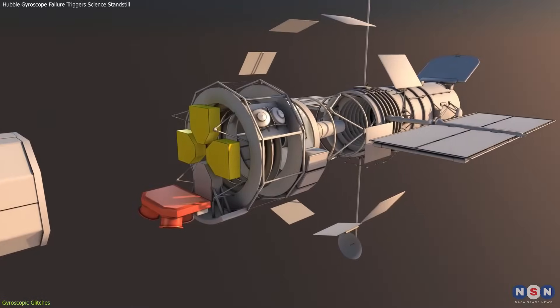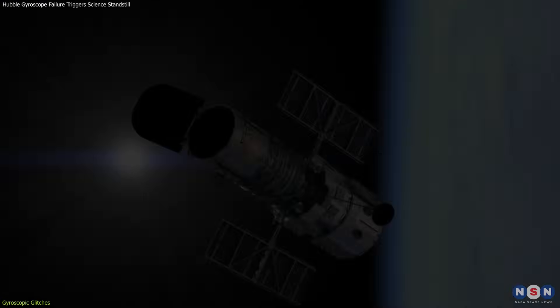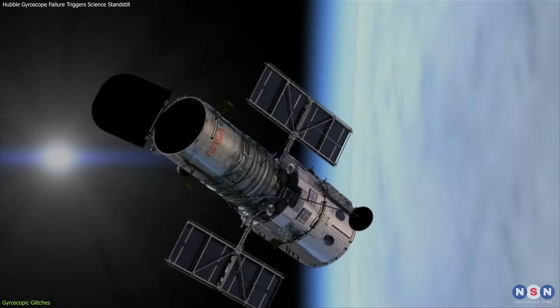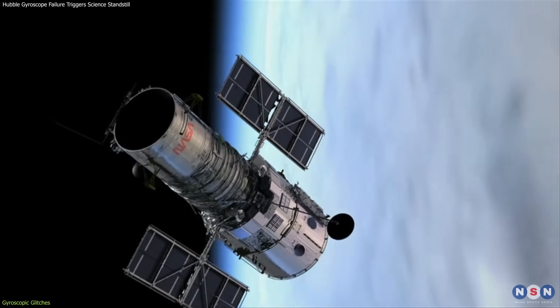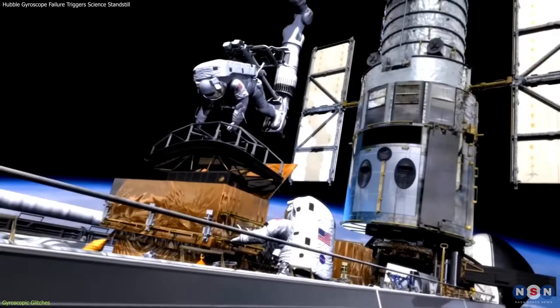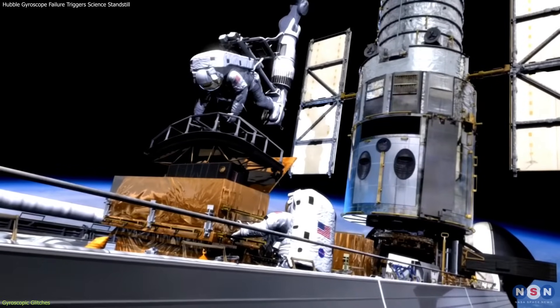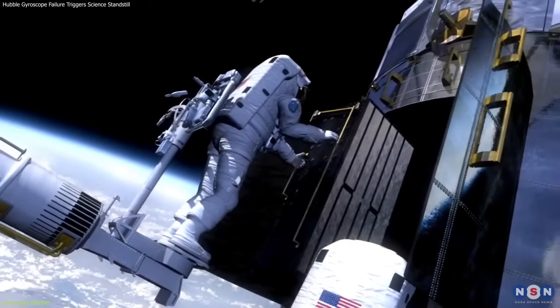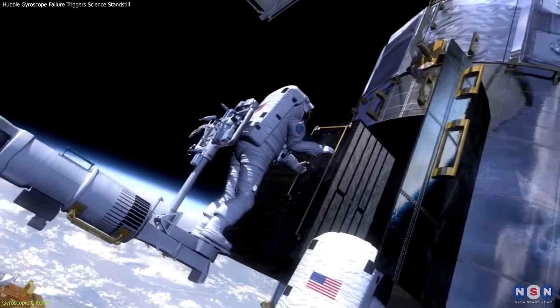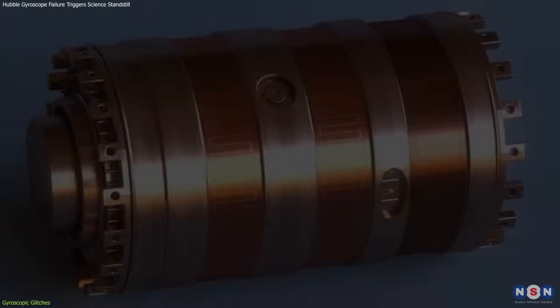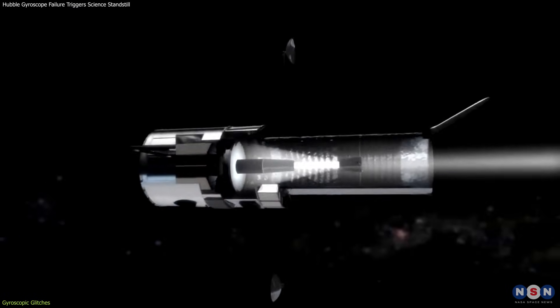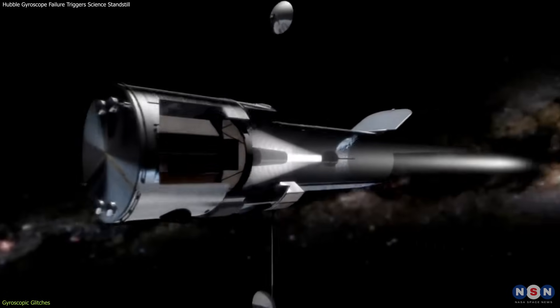The current gyroscope issue illuminates the broader challenge of maintaining aging space infrastructure, as Hubble has far exceeded its expected lifespan. The gyroscopes, upgraded last during the fifth and final servicing mission in 2009, are wearing out. Despite their robust design, the harsh conditions of space exert a relentless toll on even the most durable technologies.